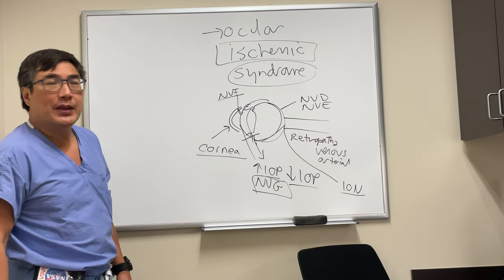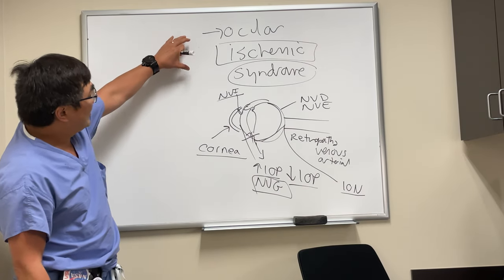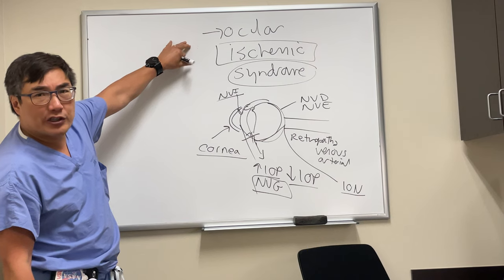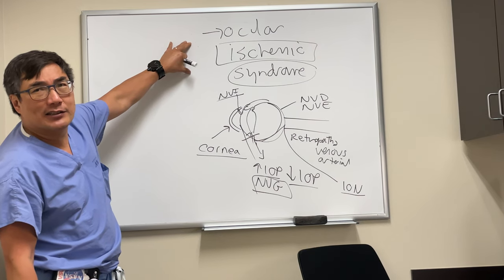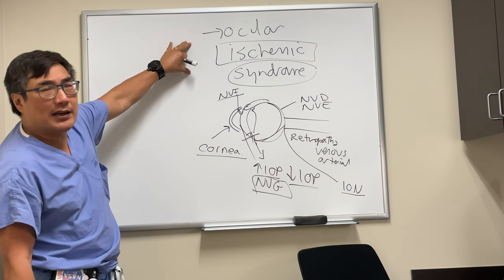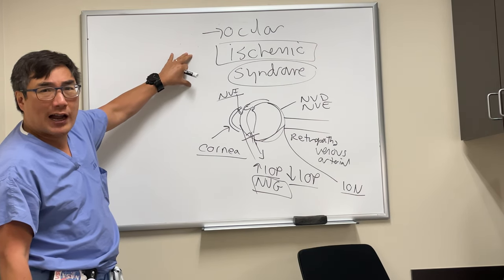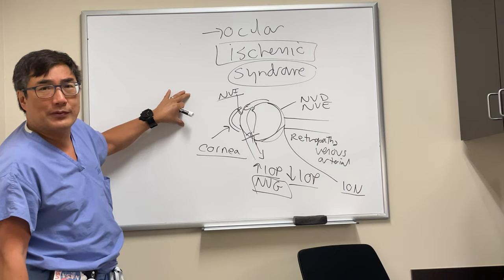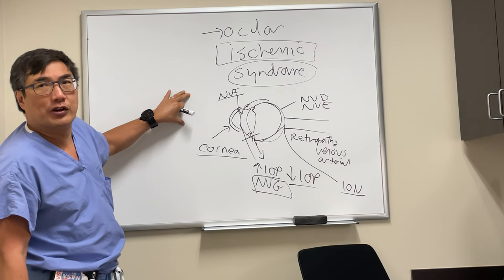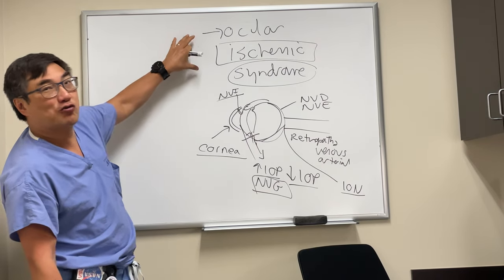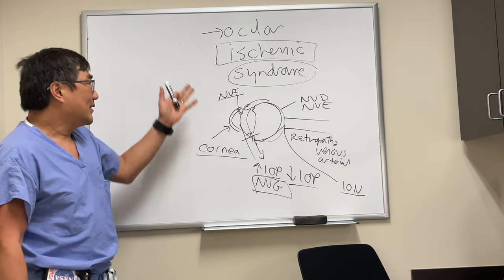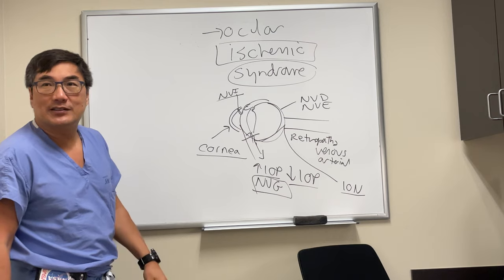Usually it's a chronic ischemia from occlusive disease and not an embolic phenomenon. The workup is the same regardless — we're going to do an MRI to look at brain ischemia, look at the carotids, and then do the standard stroke workup, because it's like a chronic stroke of the eye.